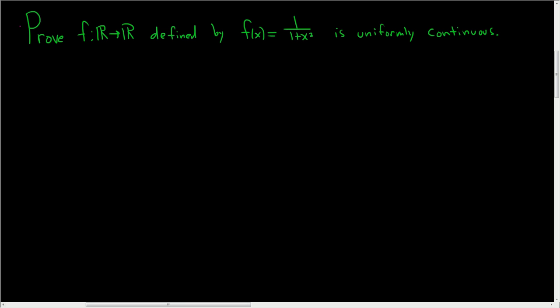Proof that the function defined by f(x) = 1/(1+x²) is uniformly continuous. Before we do this proof, let's recall what it means for a function to be uniformly continuous.